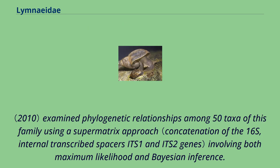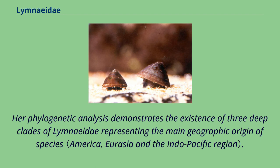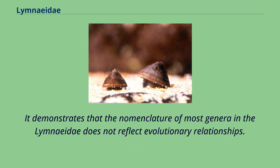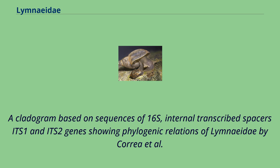Coria et al. examined phylogenetic relationships among 50 taxa of this family using a supermatrix approach involving both maximum likelihood and Bayesian inference. Their phylogenetic analysis demonstrates the existence of three deep clades of Limeidae representing the main geographic origin of species. A cladogram based on sequences of 16S, internal transcribed spacers ITS1 and ITS2 genes showing phylogenetic relations of Limeidae was produced by Coria et al.